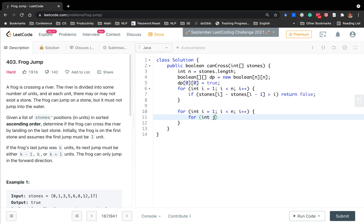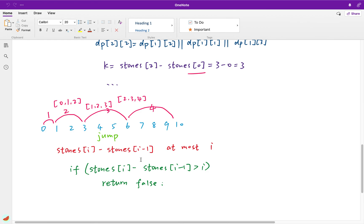And the previous stone j start from i minus 1, j greater than or equal to 0, j minus minus. So we know the jump k is equal to stone[i] minus stone[j]. We do the same check. If k is greater than j plus 1, we just break. As I mentioned before, you can understand it by if the jump, the current jump is greater than previous stone plus 1, then we cannot reach.